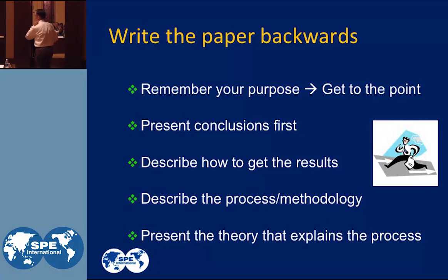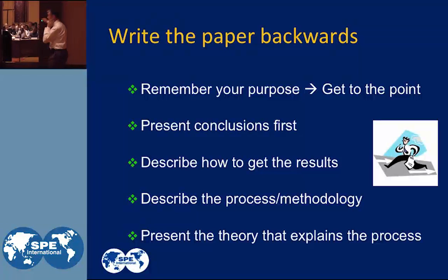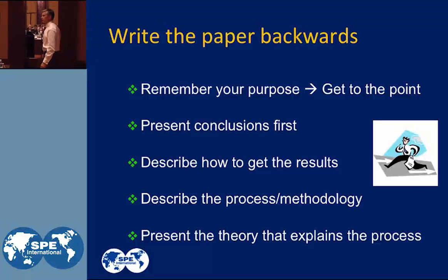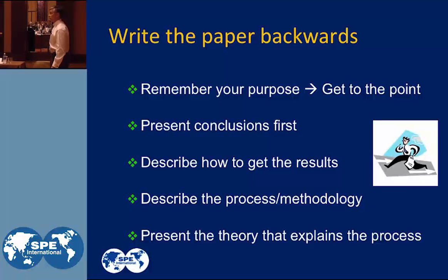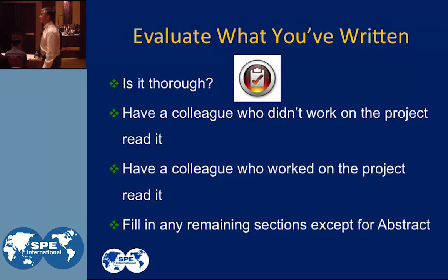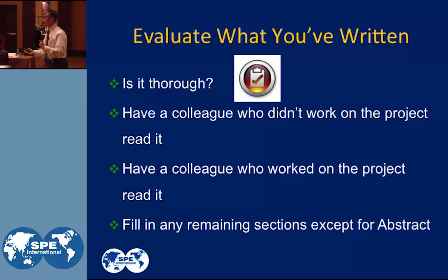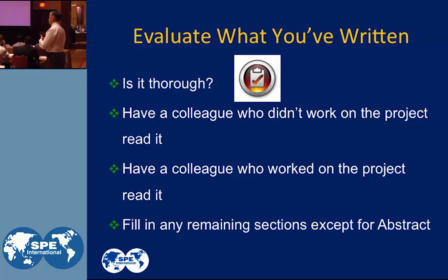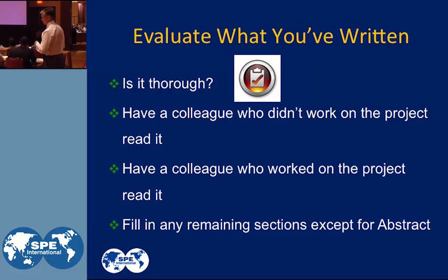Present your conclusions first. Describe how to get to the results. We're walking back up the manuscript outline. Describe the process and methodology by which you got to those results. Then present the theory that explains the process. Then evaluate what you've written — is it thorough? It doesn't need to be exhaustive, but has the work thought about every nuance and sensitivity that you need to write about to explain what you've done?